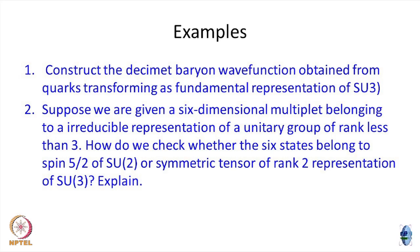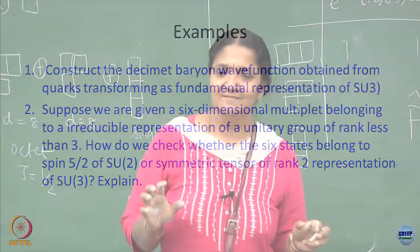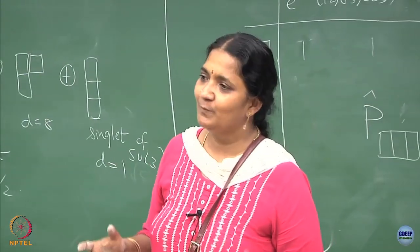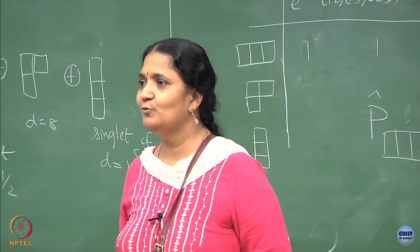This second question: suppose I give you a 6-dimensional multiplet and I do not tell you whether I am looking at an SU(2) group or an SU(3). I say the dimension of the multiplet is 6, and I also say that the rank is less than 3. So it could be a 6-dimensional representation of a group with rank less than 3, which means in a unitary context it could be either SU(2) or SU(3). I do not know whether it is SU(2) or SU(3).